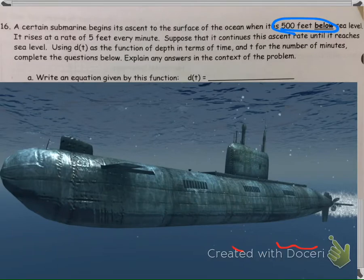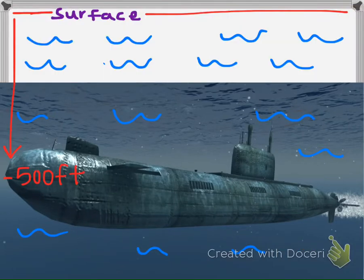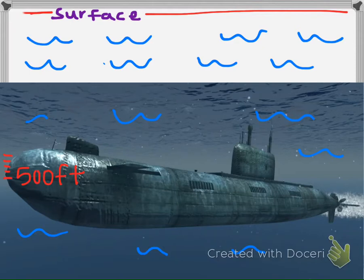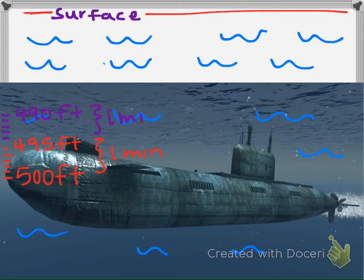The submarine is going to ascend, so that means it's going to begin to go up. It rises at a rate of 5 feet every minute. So in one minute it's going to go up 5 feet — now it's at 495 feet. Then another minute goes by and it goes up 5 more feet, so that's 490 feet. Every minute it rises up 5 feet, slowly getting to the surface.